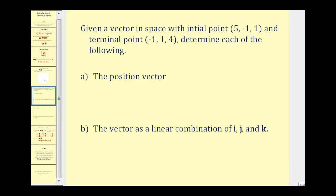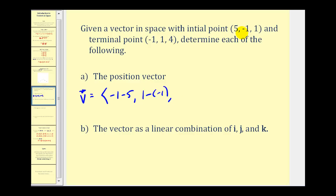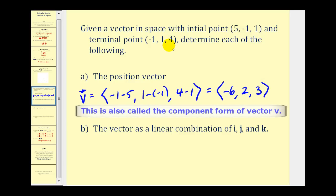Now we're given a vector in space with initial point (5, −1, 1) and terminal point (−1, 1, 4). We first want to determine the position vector — the vector with the same direction and magnitude but with initial point at the origin. To find it, subtract initial coordinates from terminal coordinates: (−1 − 5, 1 − (−1), 4 − 1), which simplifies to ⟨−6, 2, 3⟩. This is the position vector, with terminal point at (−6, 2, 3).